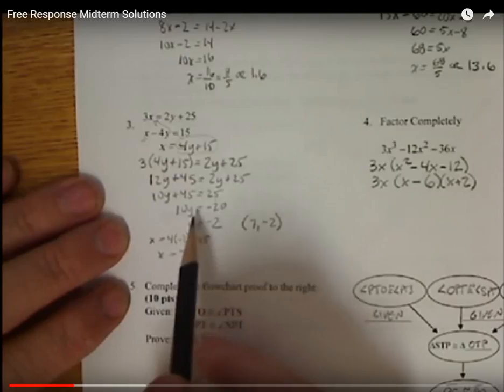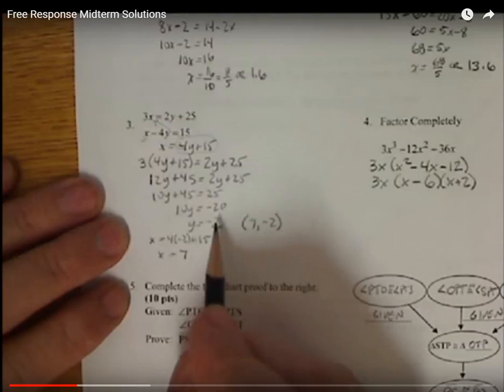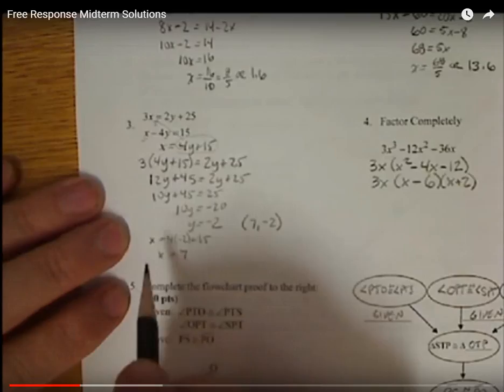Once I'm finished, I can take the y equals negative 2. Plug it back into this equation. And I got 4 times negative 2 is negative 8. Plus 15 gives me positive 7. So that means those two lines intersect at the point 7, negative 2.